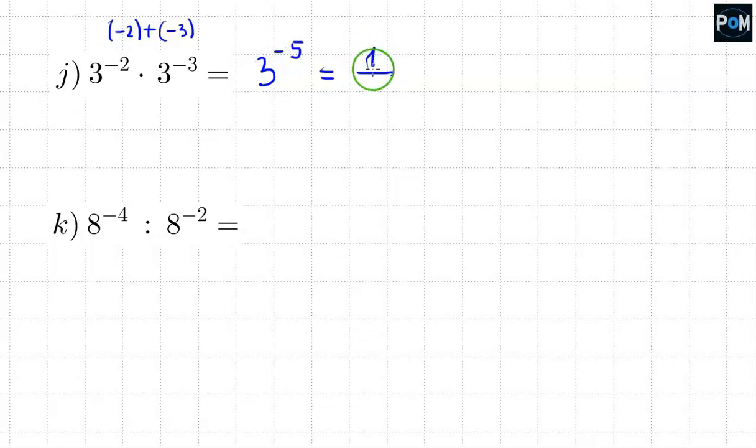So, negative 2 plus negative 3 gives us negative 5 from this. And here we apply the first method. We put 1 at the top. And at the bottom, we put 3 to the 5th power. Because here, we didn't have a fraction. We had an integer. 3 times 3 equals 9. 9 times 3 equals 27. 27 times 3 equals 81. And 81 times 3 equals 243.